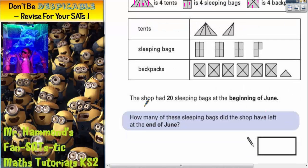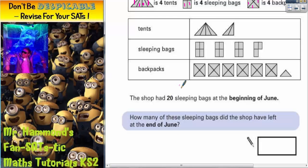Question number one says: the shop had twenty sleeping bags at the beginning of June. How many of these sleeping bags did the shop have left at the end of June? Well, we need to figure out how many we sold. So we're looking at sleeping bags.